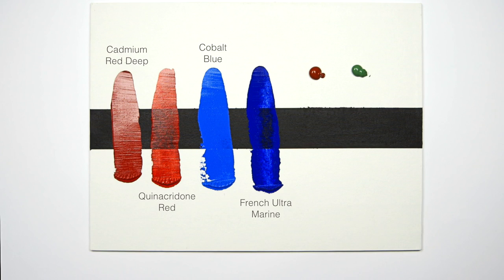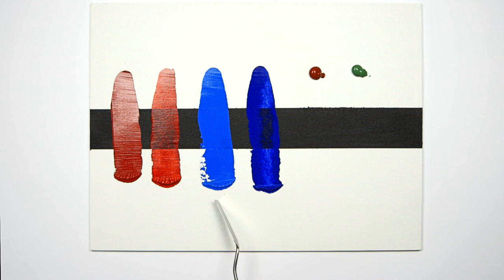As you can see, Cadmium Red and Cobalt Blue are both very opaque colors whilst Quinacridone Red and French Ultramarine are much more transparent. Transparent colors are ideal for glazing whilst these more opaque colors offer greater coverage.